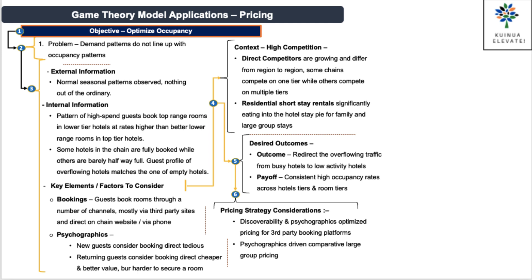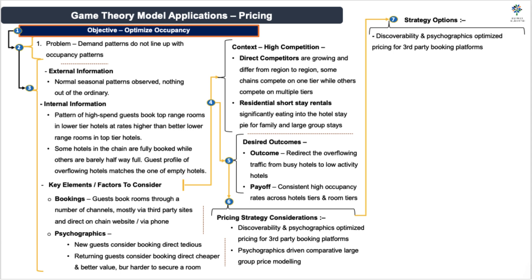We'll first deal with the strategic consideration related to the symptom of guests that are mismatched with hotel and room tiers, which dictates the use of discoverability and psychographics-optimized pricing, particularly for third-party booking platforms.